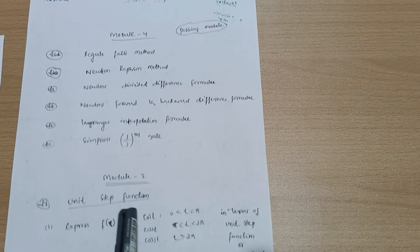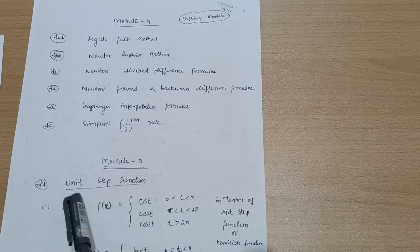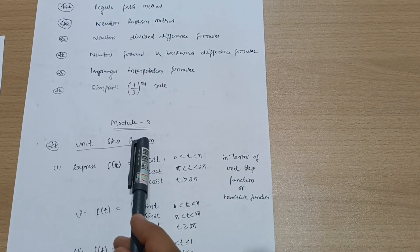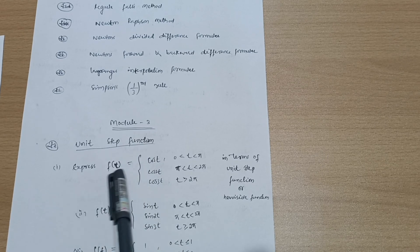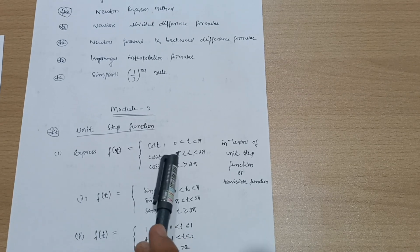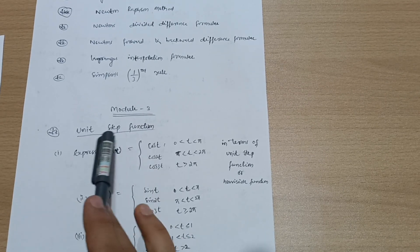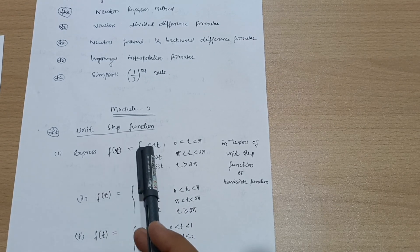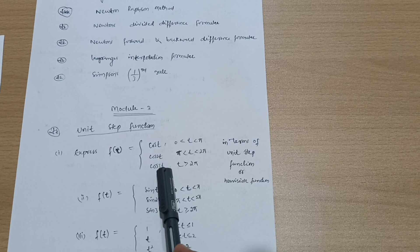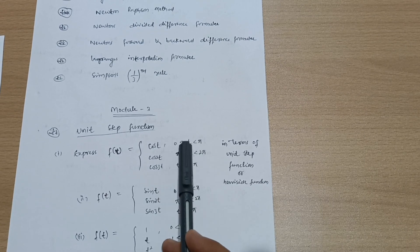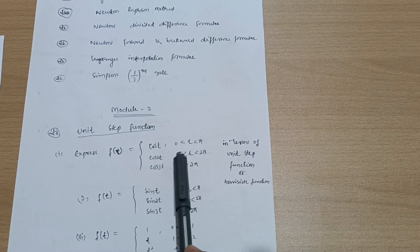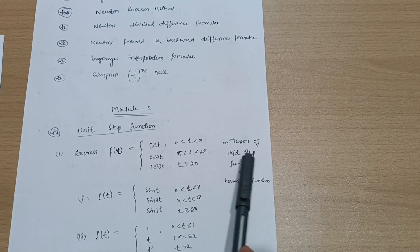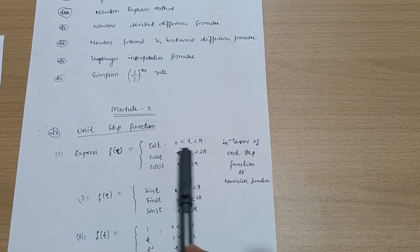That's why I've taken module third, in which one definite question will be on unit step function - very easy. I've made a video on this particular topic; the link will be in the description box. For example: f(t) = cos t, cos 2t, cos 3t where 0 < t < π, π < t < 2π, t > 2π. Express this function in terms of unit step function or Heaviside function.